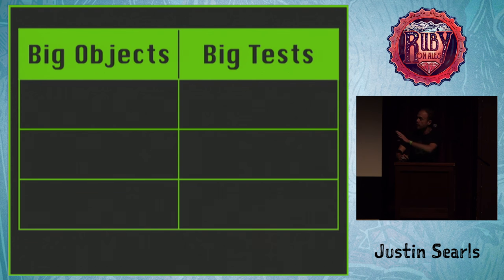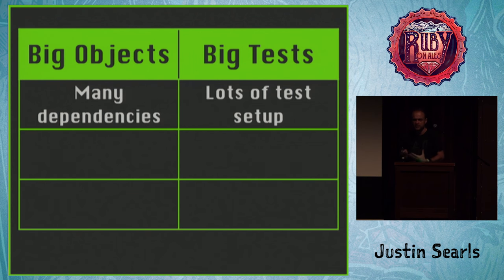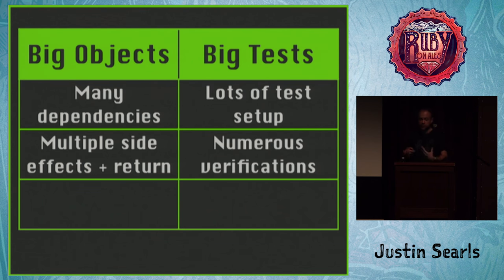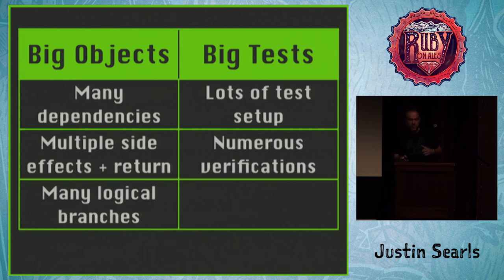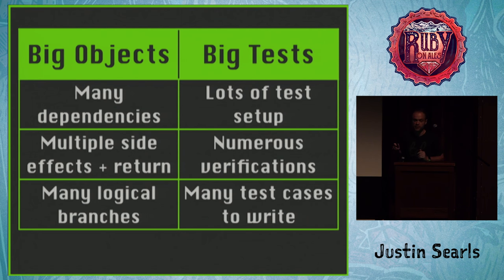The root cause is: if you have a big object, you probably have lots of dependencies, so your tests have lots of setup. Big objects typically have lots of side effects in addition to whatever they return, which means your test might have numerous verifications. But big objects also have many logical branches based on the arguments you're passing as well as the broader state of the system. And this is where things really fly off the rails — you have many test cases to write based on all of those branches.